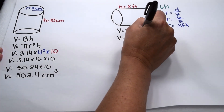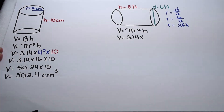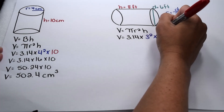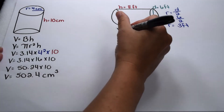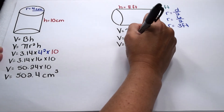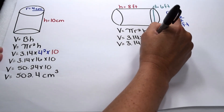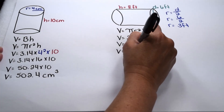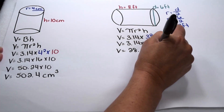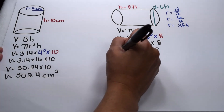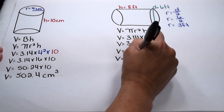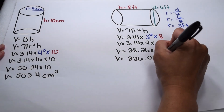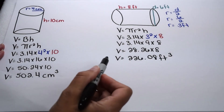We can go ahead and substitute that into our equation. So we'll have 3.14 multiplied by 3 squared for our radius, multiplied by 8 for our height. 3 squared comes out to give me 9, so we have 3.14 times 9 times 8. 3.14 times 9 gives me 28 and 26 hundredths. Then we multiply that by 8, giving me 226 and 8 hundredths. This is labeled in feet, so this will also be labeled in feet to the third power, giving us a volume of 226 and 8 hundredths cubic feet.